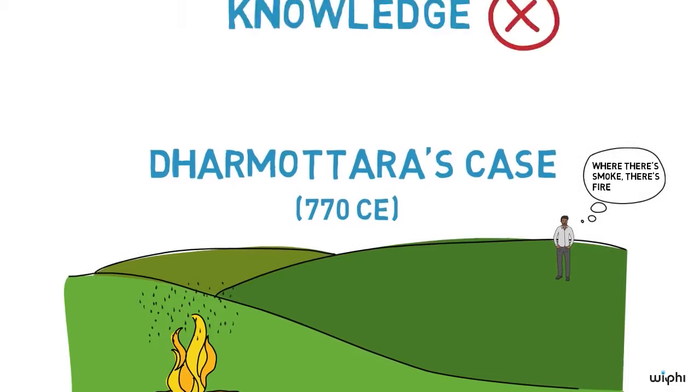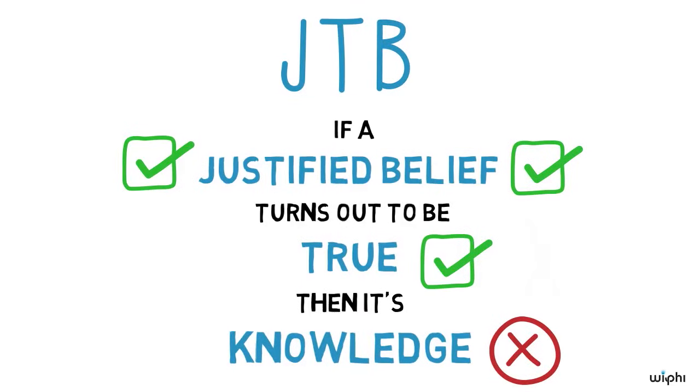Dharmatara suggests that this distant observer doesn't know that there's a fire burning. Looking back on this story, we can use it as a counter example to the JTB analysis of knowledge.